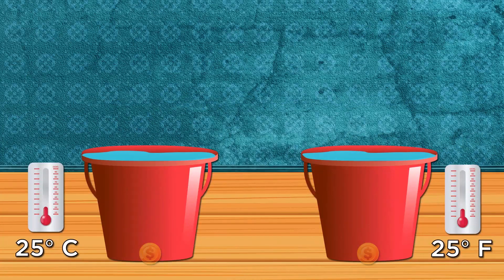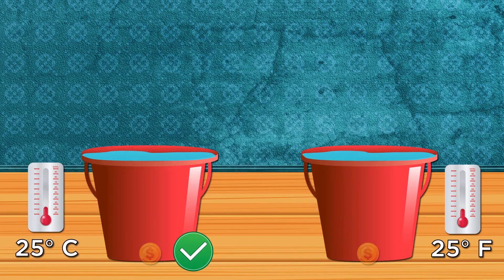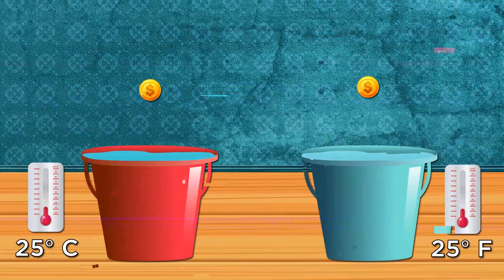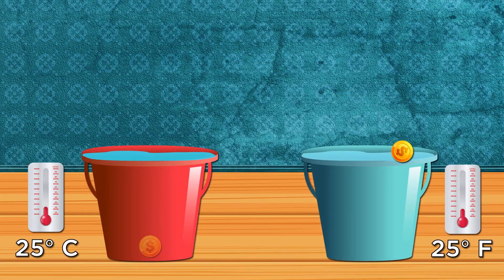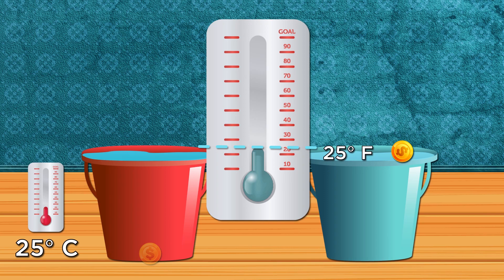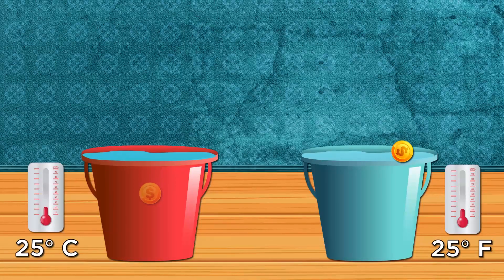The answer is the coin in the 25 degrees Celsius bucket will hit the bottom first because the other bucket of water is frozen. 25 degrees Fahrenheit is below freezing, which for water is 32 degrees Fahrenheit. So that bucket is filled with ice. Now let's continue with something more complex than this. Brace yourself.